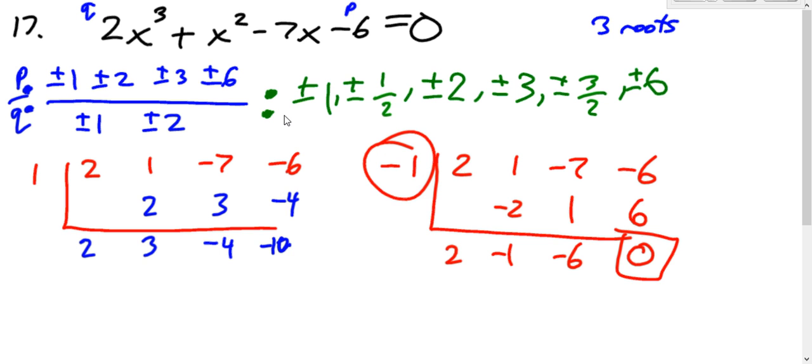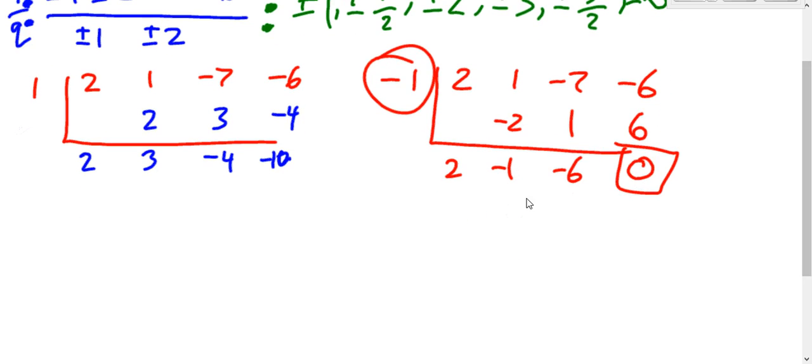You could continue trying all the rest of these to see if any more of them work. Or since now we've found one, we're now left with just 2x squared minus x minus six. And this can be solved by factoring instead of having to do more synthetic division. Synthetic division might take us a whole bunch more tries. Factoring, we'll get our two right away. So take what's left over once you find one root, once you find one of the zeros, and factor what's left over once you're down to an x squared.